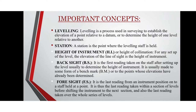Back sight: it is the first reading taken on the staff after setting up the level, usually to determine the height of instrument. It is usually made to some form of a benchmark or to a point where elevations have already been determined. Foresight: it is the last reading from an instrument position onto a staff held at a point. It is thus the last reading taken with a section of levels before shifting the instrument to the next section, and also the last reading taken over the whole series of levels.